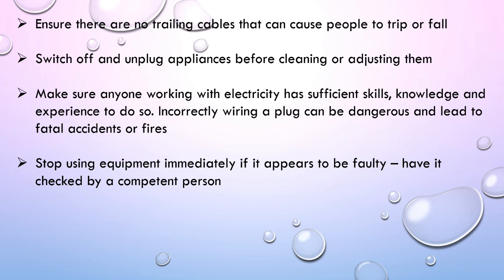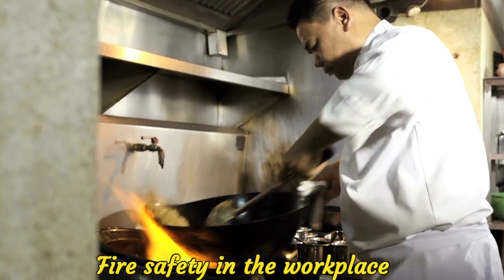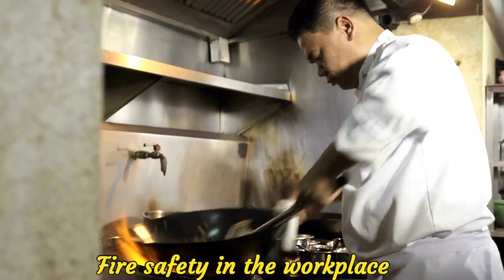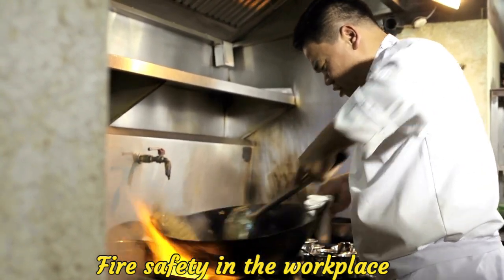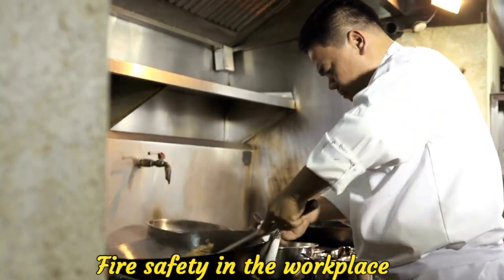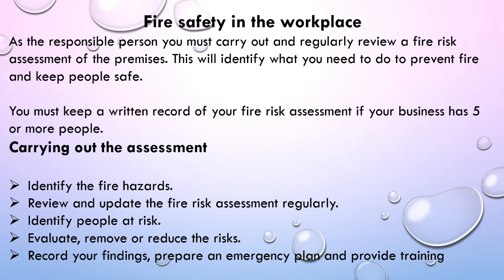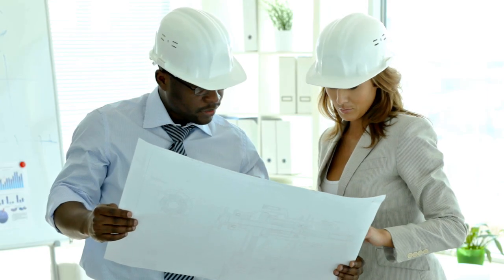Stop using equipment immediately if it appears to be faulty and have it checked by a competent person. For fire safety in the workplace: as the responsible person, you must carry out and regularly review a fire risk assessment of the premises. This will identify what you need to do to prevent fire and keep people safe. You must keep a written record of your fire risk assessment if your business has five or more employees.